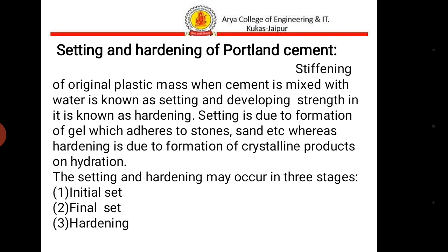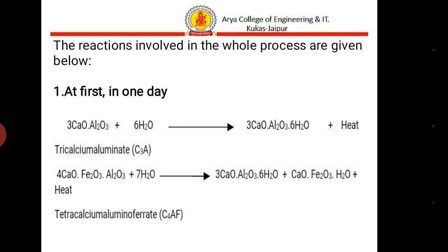The setting and hardening may occur in three stages: initial set, final set, and hardening. The reactions involved in the whole process are as follows. On the first day, tricalcium aluminate reacts with water to form hydrated tricalcium aluminate. Tetracalcium alumino ferrite reacts with water to form hydrated tetracalcium alumino ferrite.